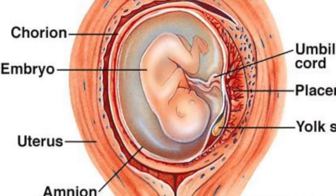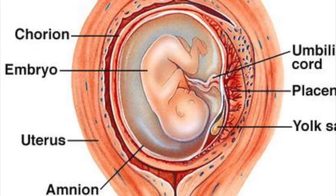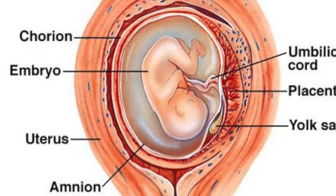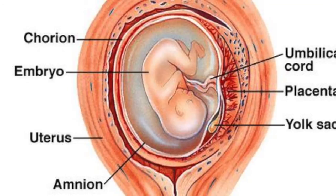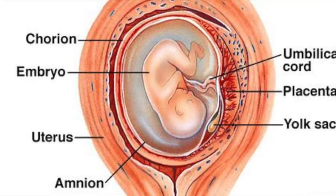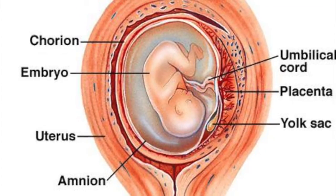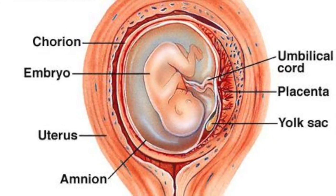Together, the chorion and the lining of the uterus form an important organ called the placenta. The placenta allows mother and embryo to exchange oxygen, nutrients, and wastes. The placenta is connected to the embryo through the umbilical cord.